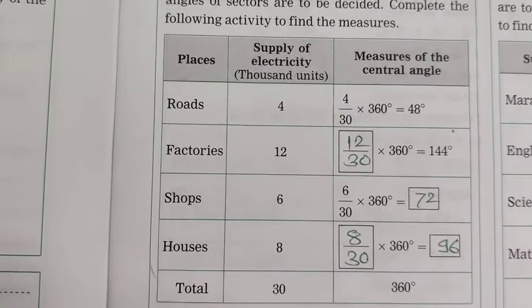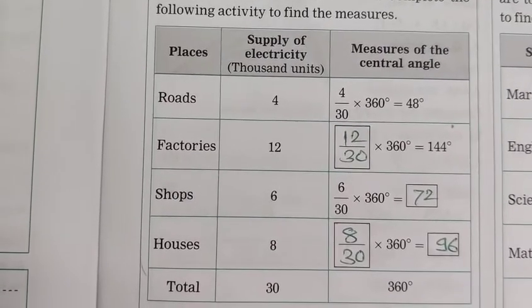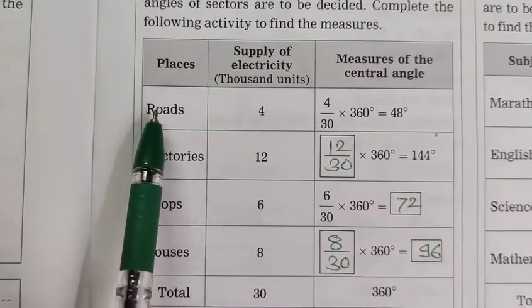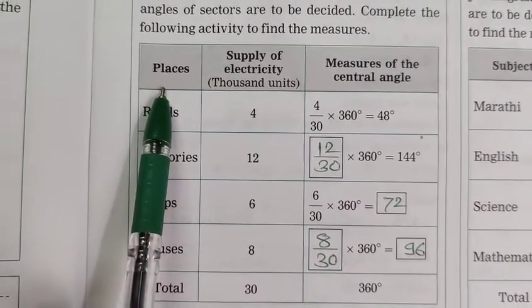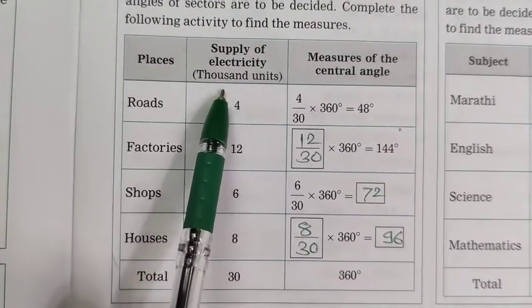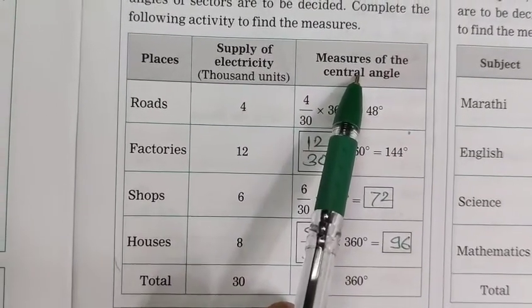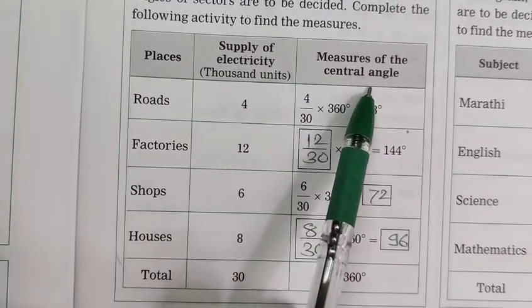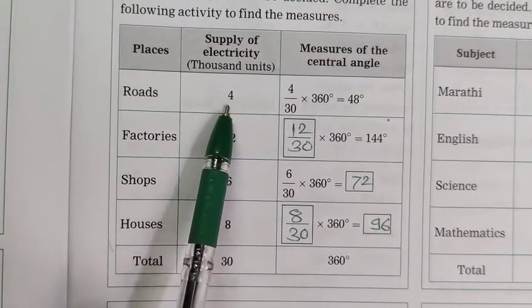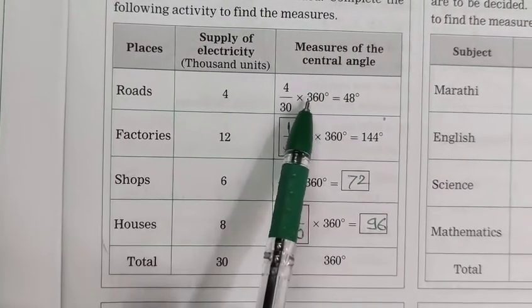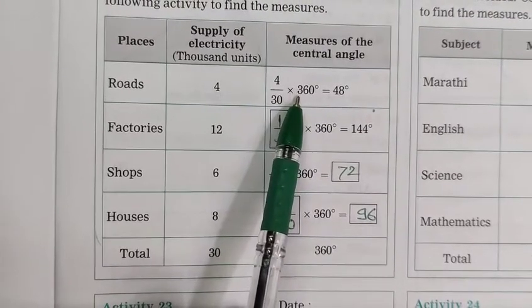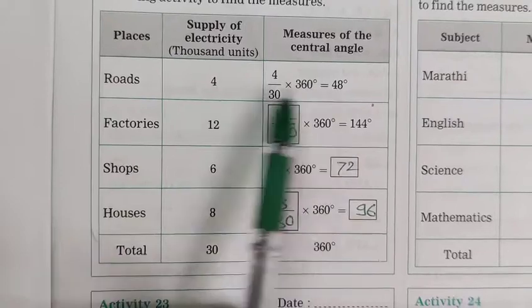Here is a chart with the places. The columns are: places, supply of electricity in thousand units, and measures of central angle. First places: roads, supply of electricity 4, and measures of the central angle equal to 4 by 30 into 360 equal to 48. This is given.